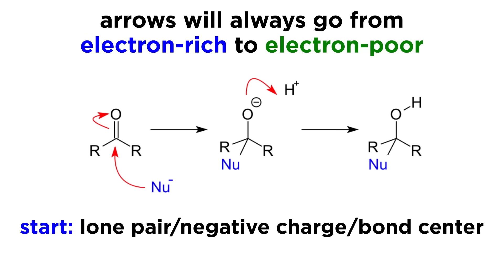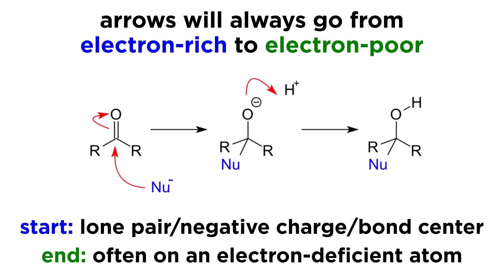This means arrows can start either from a lone pair, a negative charge, or the center of a covalent bond, and they always end at some atom, which often has a partial positive charge or a formal positive charge.